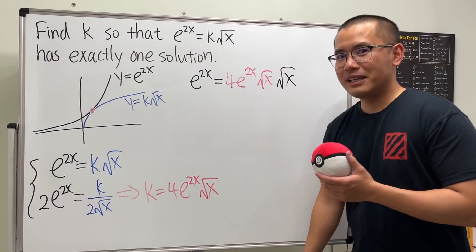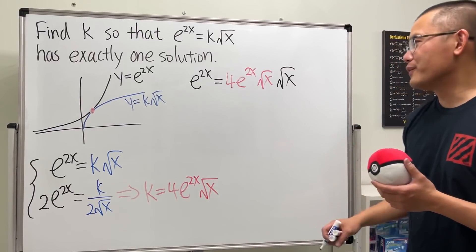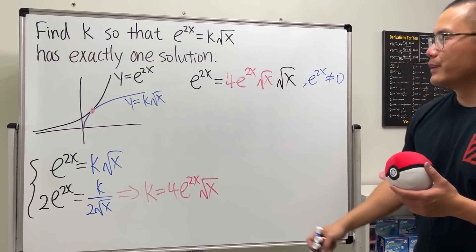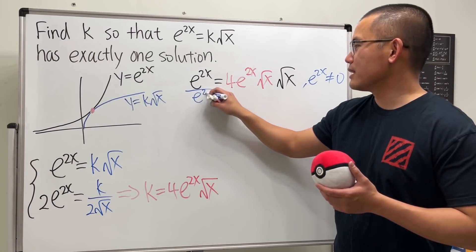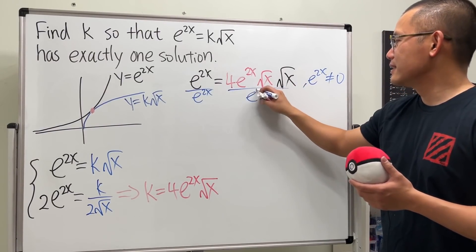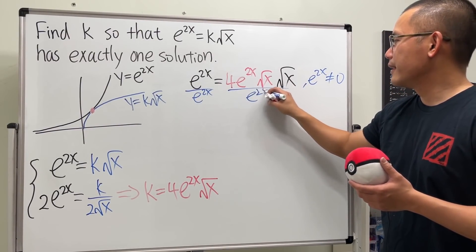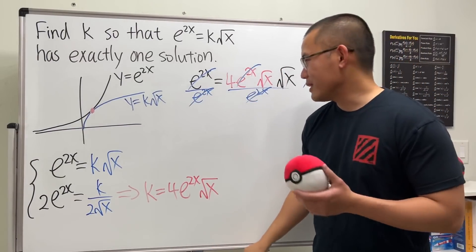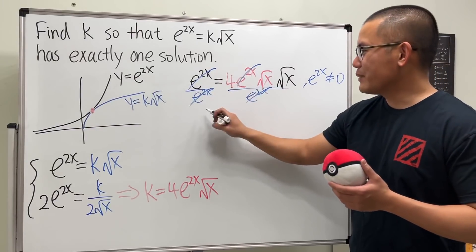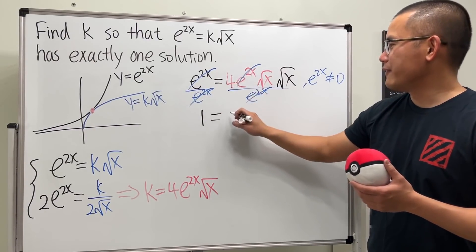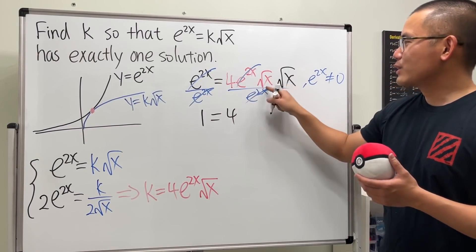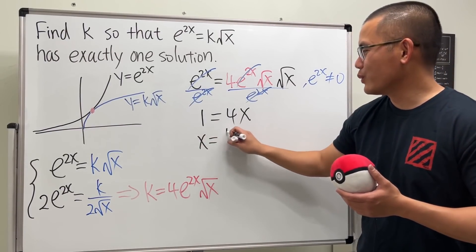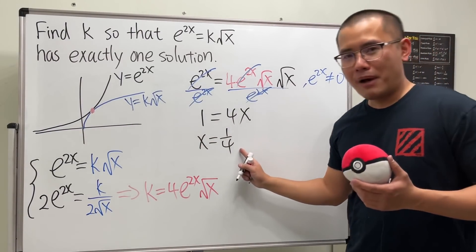Notice we have e^(2x) on both sides, and since e^(2x) is never zero, we can divide both sides by it. On the left we get 1, and on the right we get 4 times square root of x times square root of x, which is just 4x. So x = 1/4.